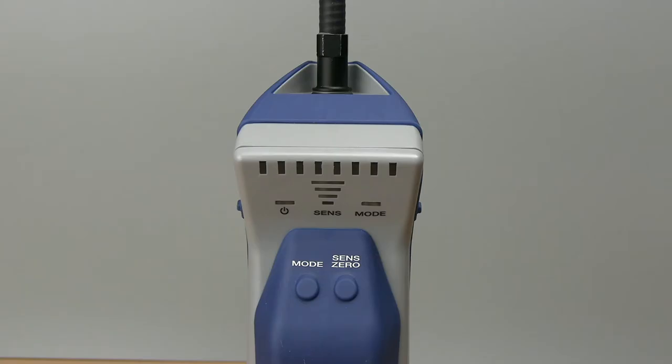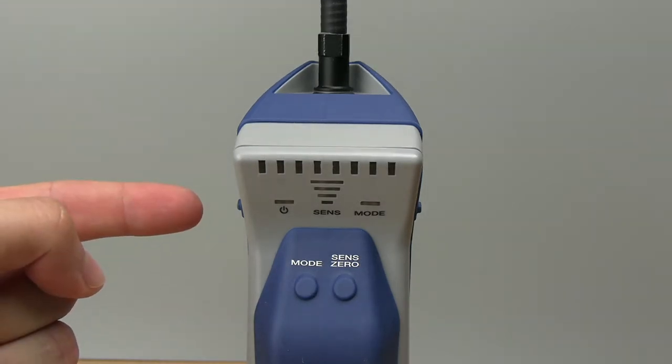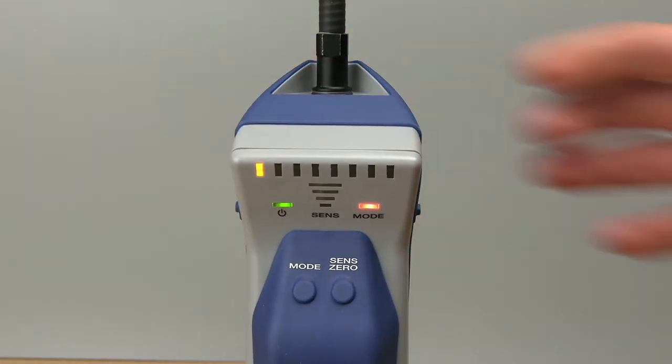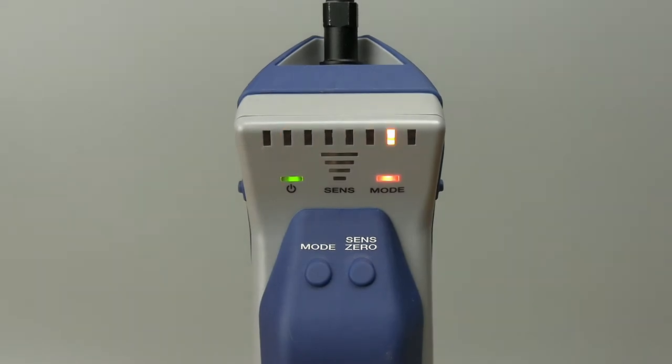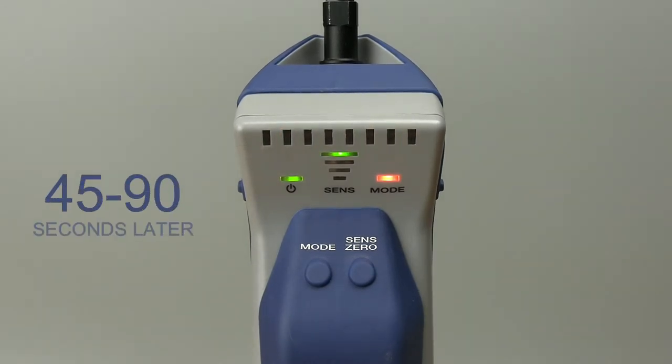To turn DTEK3 on, long press the power button. DTEK3 will go through a quick warm-up for 45 to 90 seconds. When the warm-up is complete, DTEK3 will beep steadily and is ready for use.